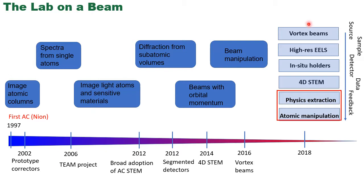Looking at the full spectrum of electron microscopy techniques available now, we can see that on the side of the electron beam source, sample environments, detectors, and data generation systems, there have been a remarkable number of breakthroughs. High-resolution electron microscopy is perhaps one of the most promising techniques for probing and manipulating matter at the atomic scale. However, given all these developments on the instrument side, the question becomes: what are we going to do with the data? This spurred us to engage in developing techniques for automatic image and spectrum analysis in STEM.